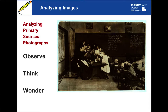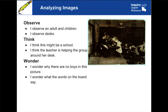Some things that you might have thought about as you're looking at this image: I observe an adult and children. I observe desks. And then when you get down to the think — the inference — you think, well, I think since there's an adult and children and desks, this might be a school. And I think that the teacher might be helping this group around her desk. Then some questions that might have come up are, I wonder why there are no boys in this picture, and I wonder what the words on the board say. Observe, Think, Wonder is a really great tool for doing introductory analysis of images.